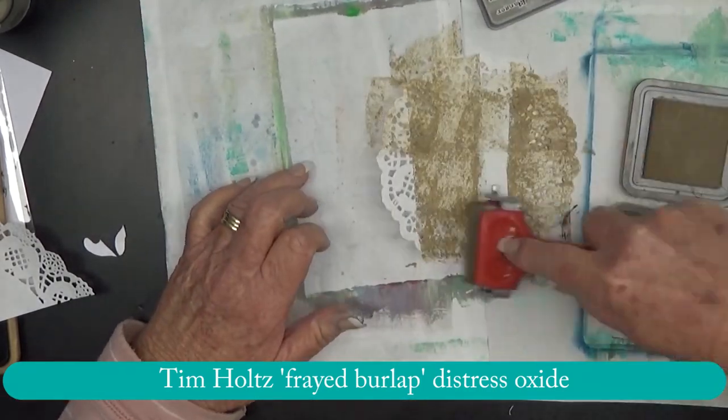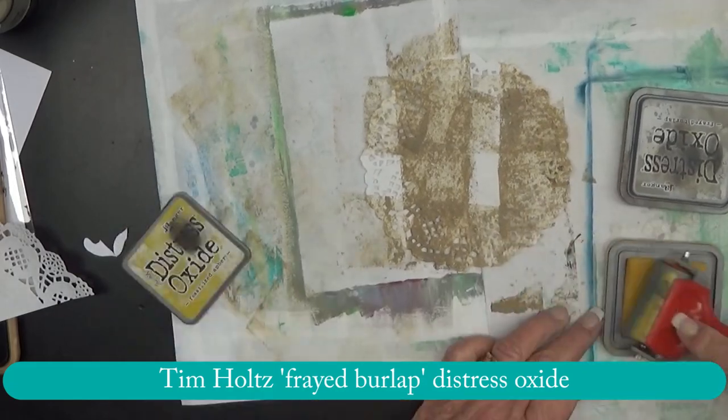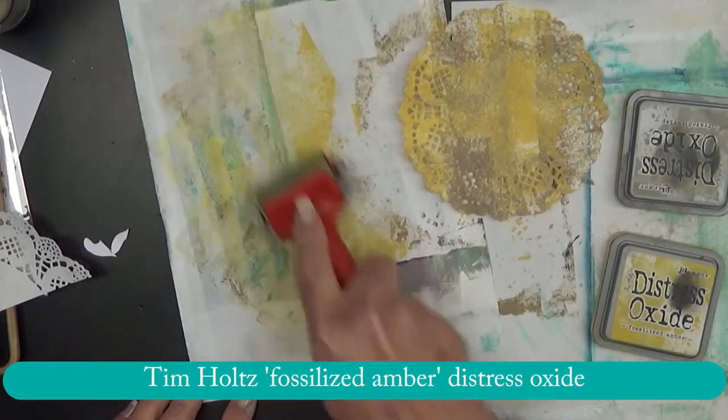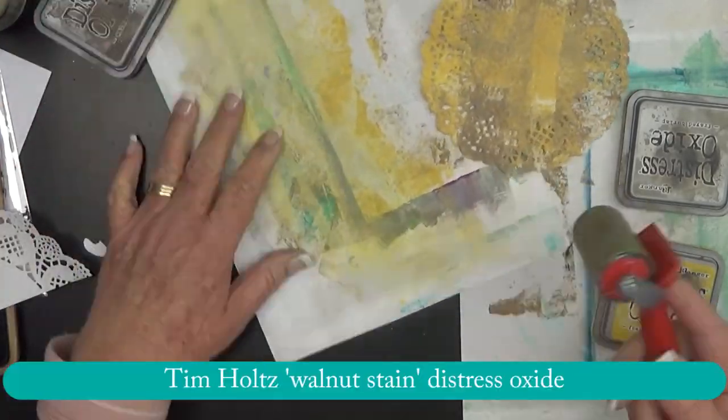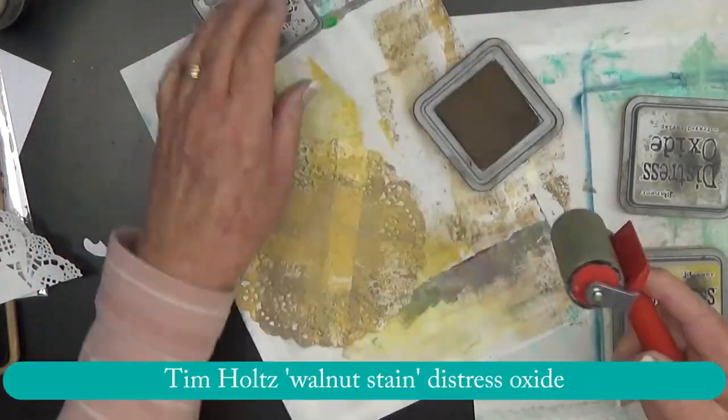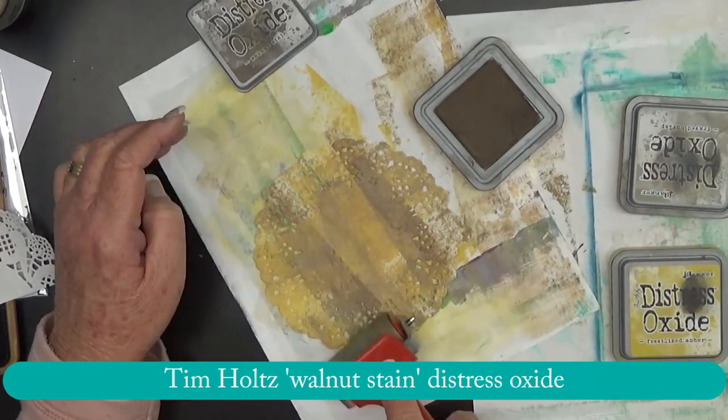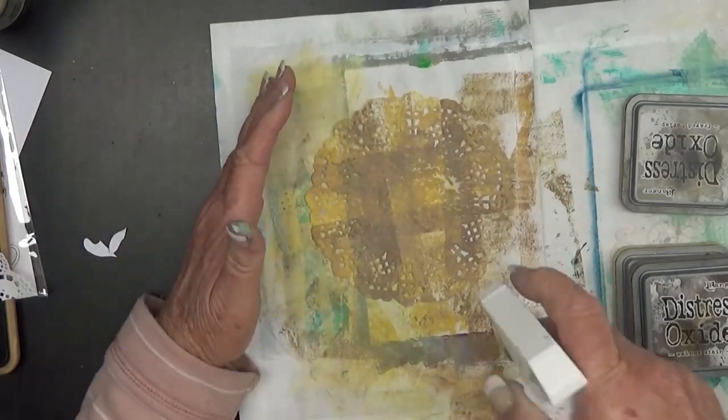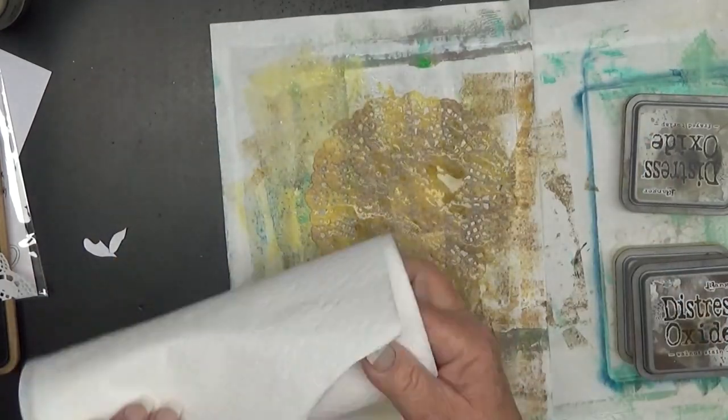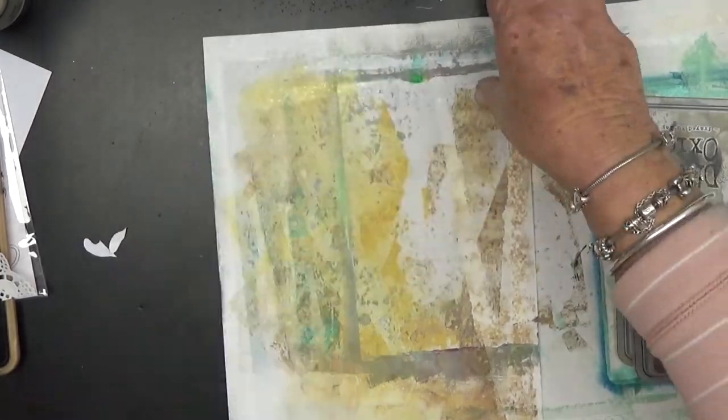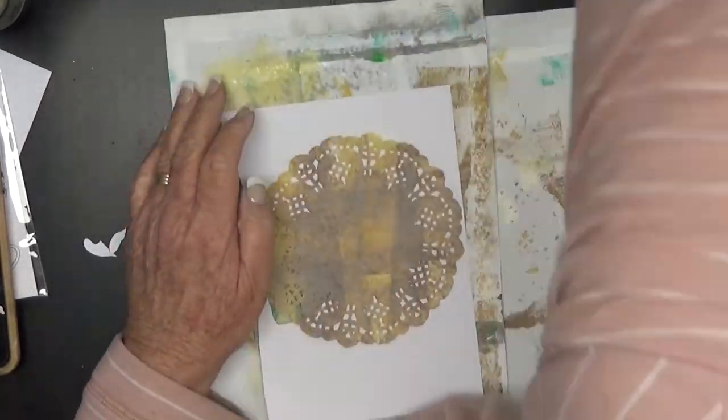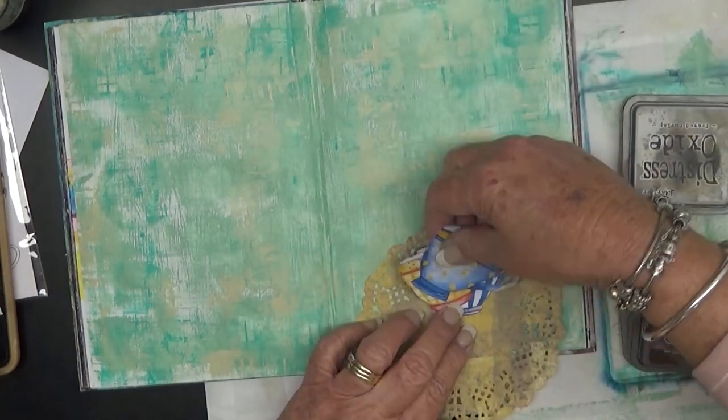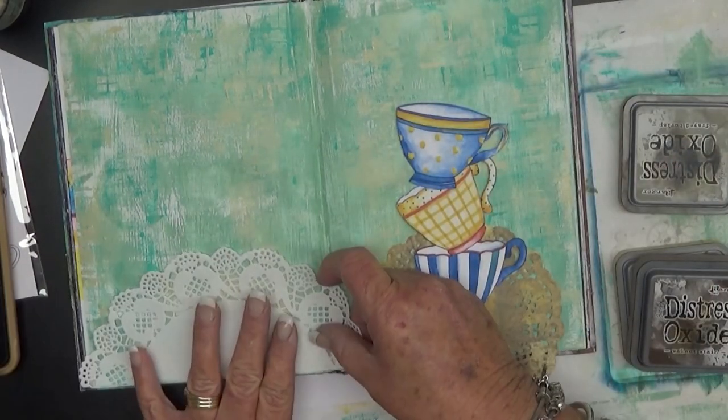So coloring up the smaller doily with some distress oxide inks, fossilized amber and walnut stain. In a tartan style and I'm spritzing it and then I roll over the paper towel roll, add some texture and dry it and done.